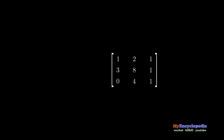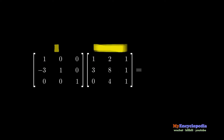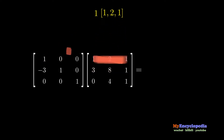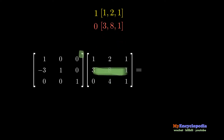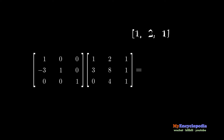If a matrix A is left multiplied by another matrix E, the resulting matrix is a row combination of matrix A. That is, taking 1 of the first row of A, 0 of the second row, 0 of the third row, and adding them together to form the first row of the result.